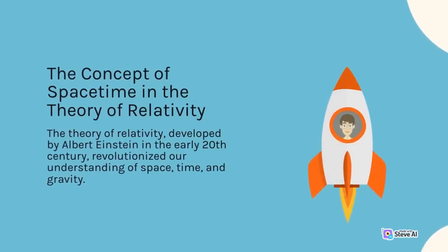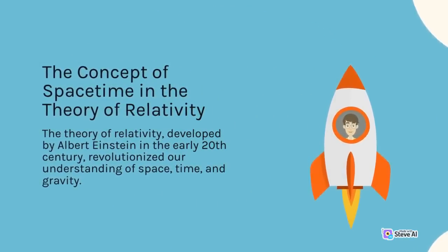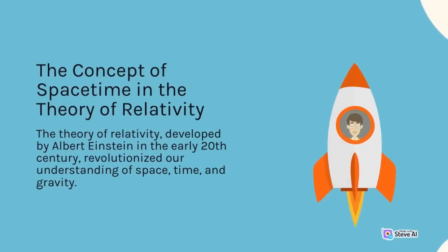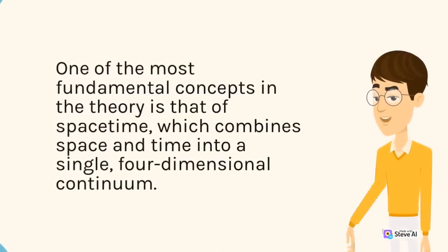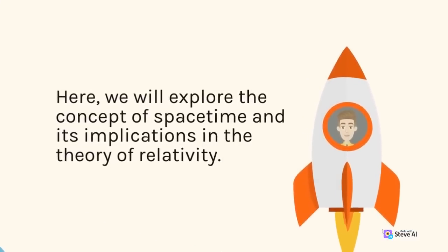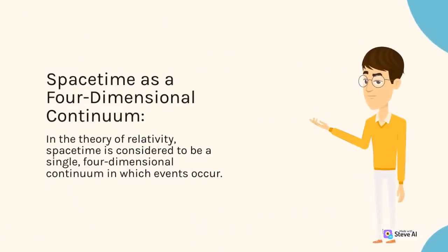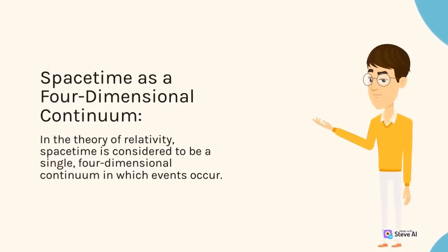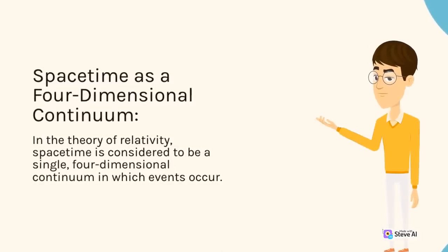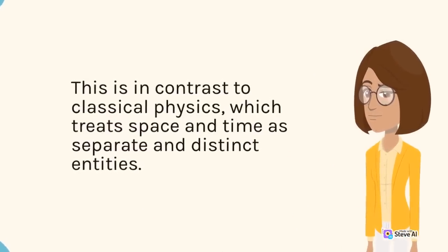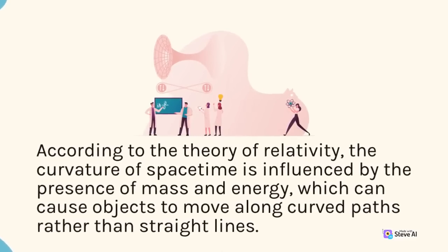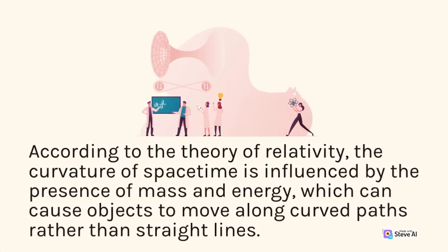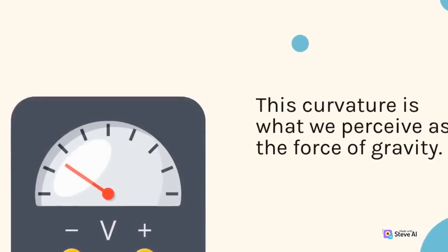The concept of space-time and the theory of relativity. The theory of relativity, developed by Albert Einstein in the early 20th century, revolutionized our understanding of space, time, and gravity. One of the most fundamental concepts in the theory is that of space-time, which combines space and time into a single, four-dimensional continuum. In the theory of relativity, spacetime is considered to be a single, four-dimensional continuum in which events occur. This is in contrast to classical physics, which treats space and time as separate and distinct entities. According to the theory of relativity, the curvature of spacetime is influenced by the presence of mass and energy, which can cause objects to move along curved paths rather than straight lines. This curvature is what we perceive as the force of gravity.